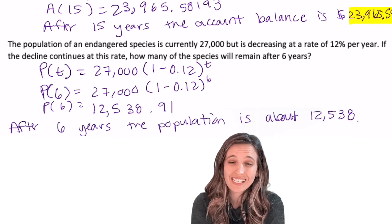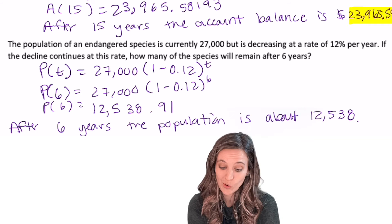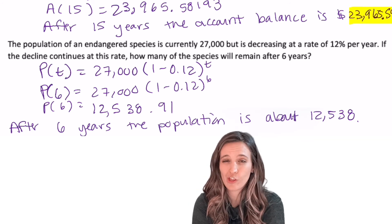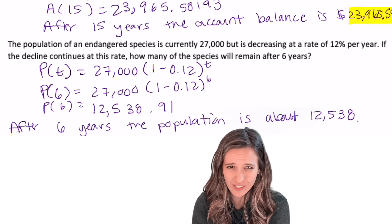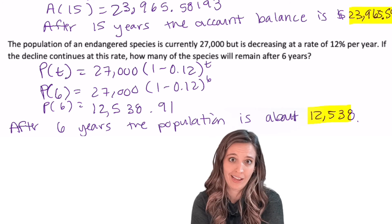Then I'm trying to figure out what the population is after six years. So I can plug in six. So after six years, the population has declined to about 12,538. I'm not going to include those decimals, right? Because we can't have 0.91 of a species.